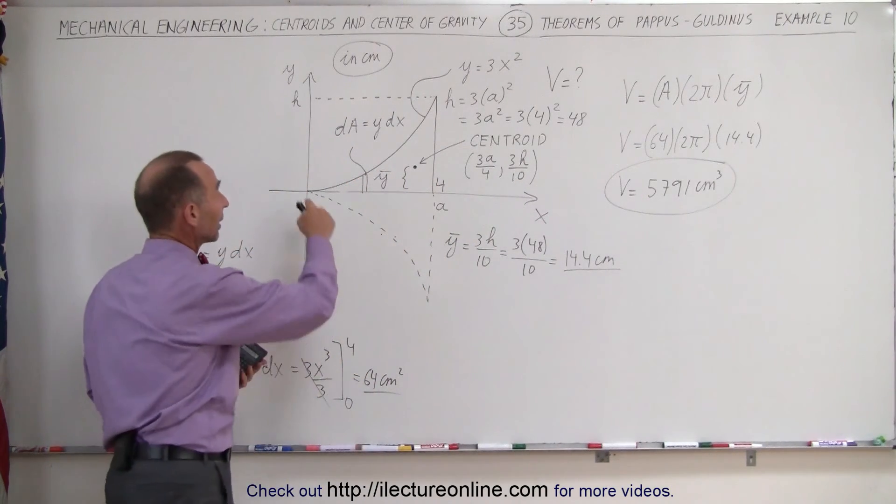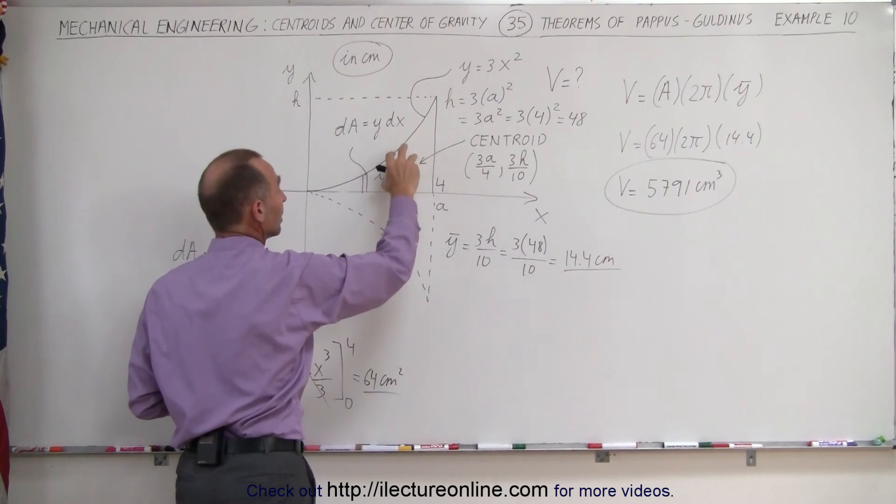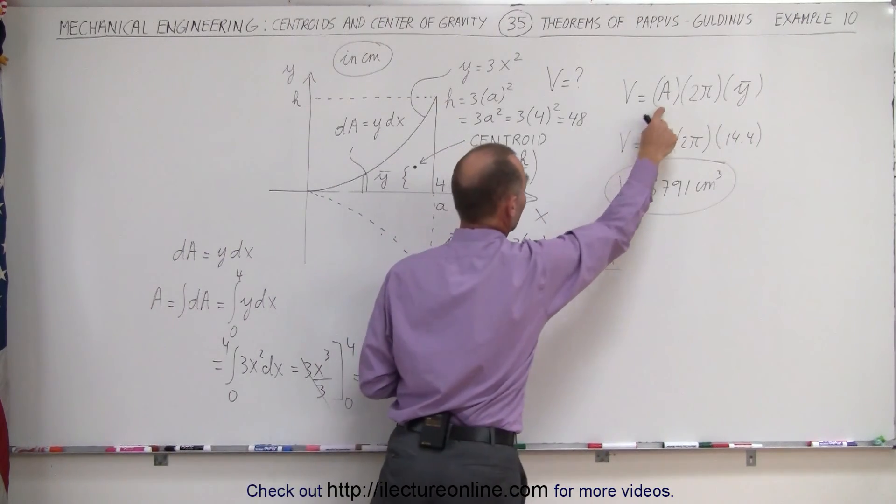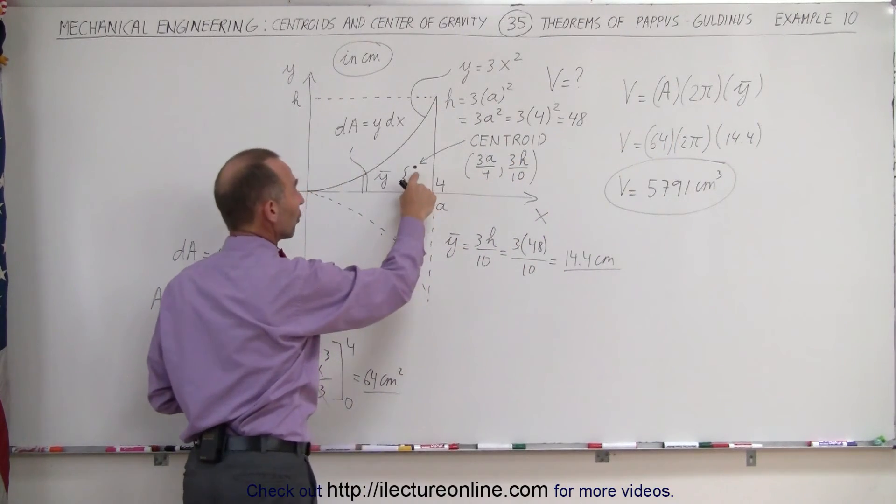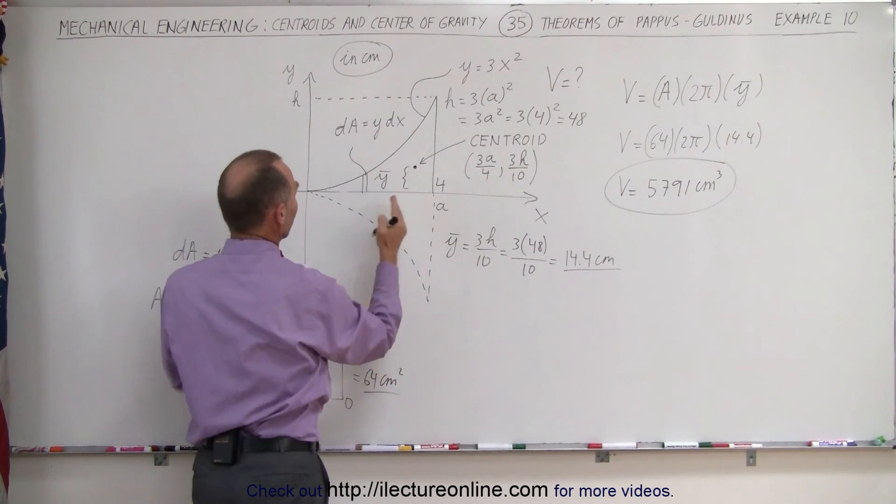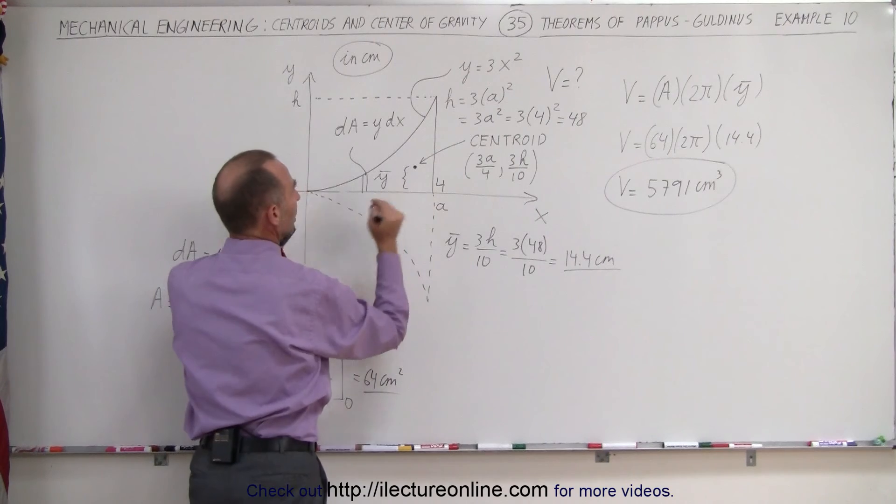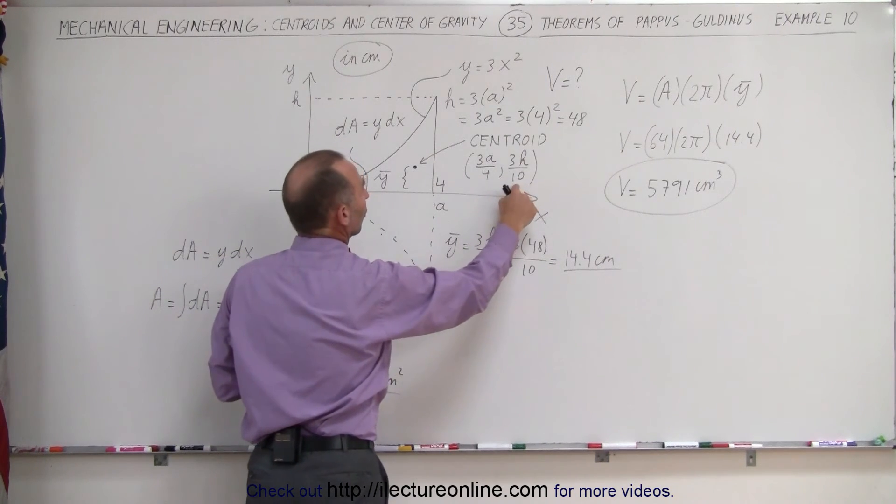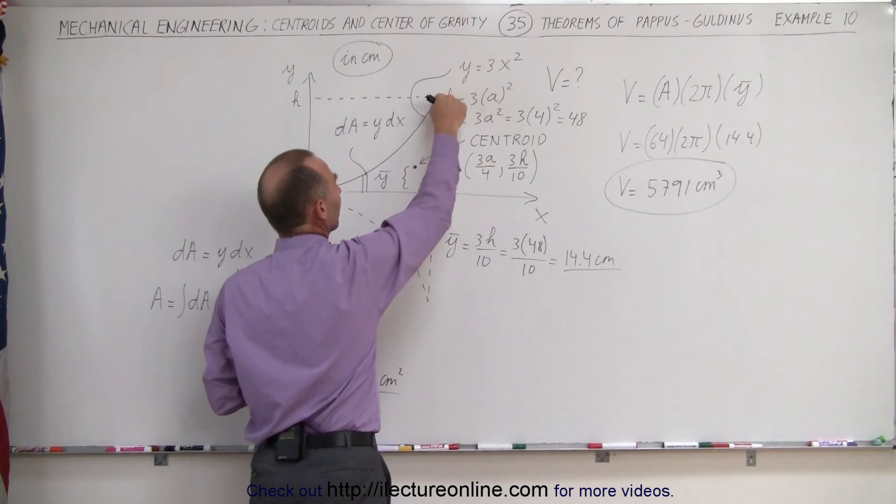Again, the way we do that is we recognize that there's a parabolic shape for which we need to find the area. That's the first part of the equation. We also need to find the centroid for a parabolic shape. The centroid, the x-coordinate is 3a divided by 4, a being the distance from the vertex to here. 3h over 10 is the distance from here to that spot.